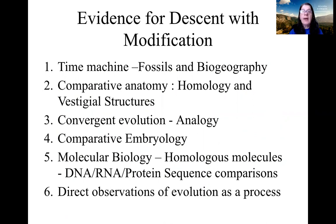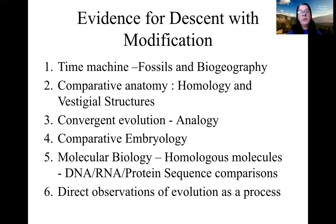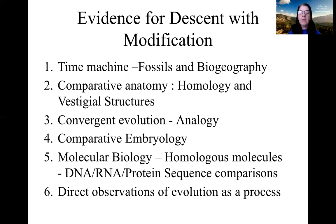Three would be analogous structures, which are evidence for convergent evolution — these are similar adaptations in evolutionarily unrelated creatures. Comparative embryology shows us how certain animals develop early in development. Molecular biology involves comparing the sequences in DNA, RNA, or protein molecules between different organism species. And finally, direct observations of evolution as an ongoing process are also evidence for the theory of evolution.